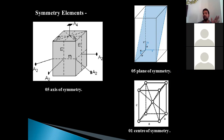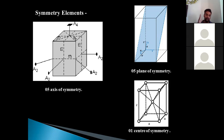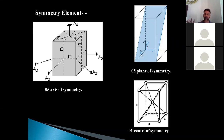Similarly, in the isometric system there were 9 planes of symmetry, but in the tetragonal system we have only 5 planes of symmetry. Five planes of symmetry means there are 5 planes in the tetragonal system along which, if you divide the crystal, you will get 2 equal halves. So there is a considerable decrease in the planes of symmetry. And of course, we have one centre of symmetry, which is common to all crystal systems because, with such symmetry, there has to be a centre where on the extreme ends we get similar features — as already discussed in previous lectures.